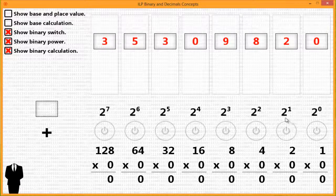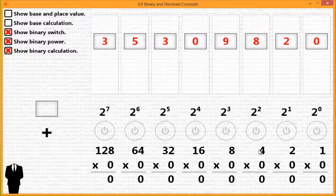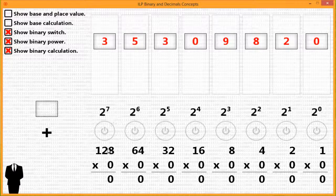2 to the 0 power is 1. 2 to the 1 power is 2. 2 to the 2 power is 4, and so forth until you have 2 to the 7 power is 128.